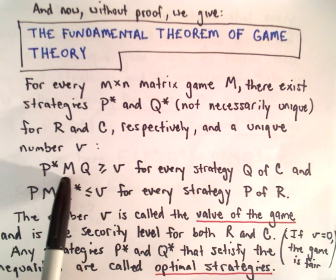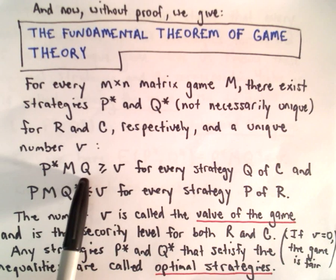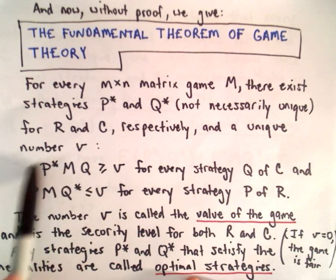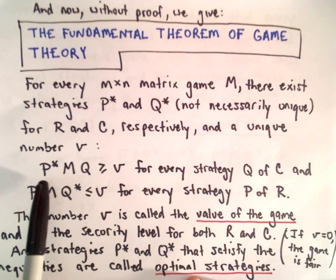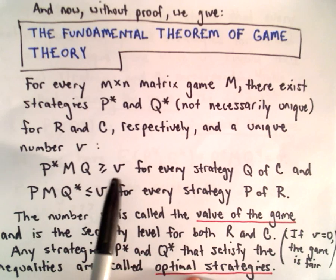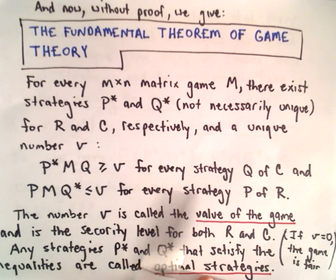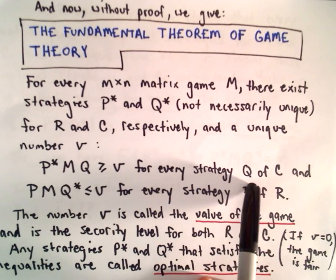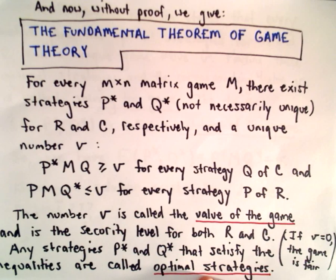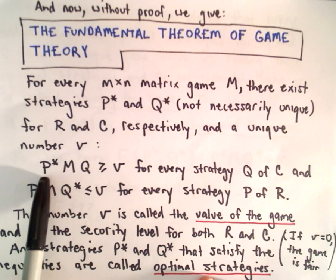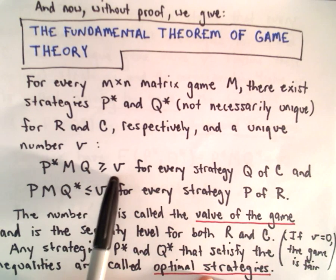It says if we take P* and multiply it by M and multiply it by Q, so again, we're finding the expected value using this strategy. It says the expected value is always going to be greater than or equal to some number V, no matter what strategy that the column player chooses. So it says with this strategy, you'll know that the value is at least this number.